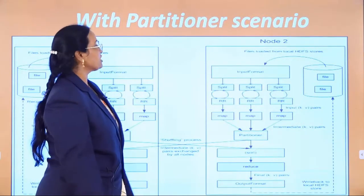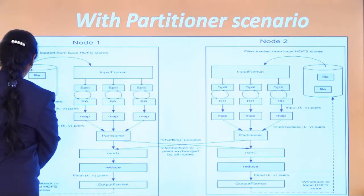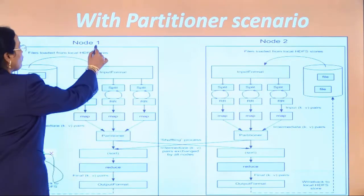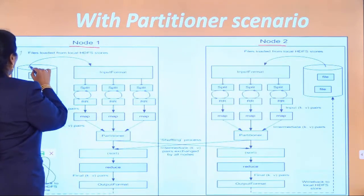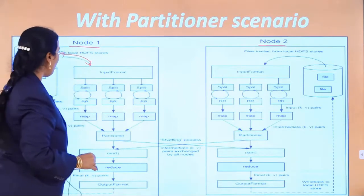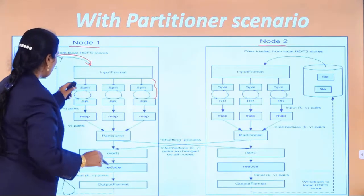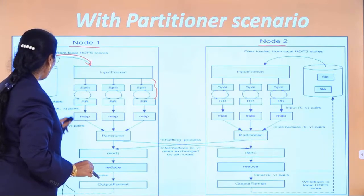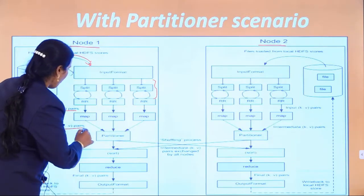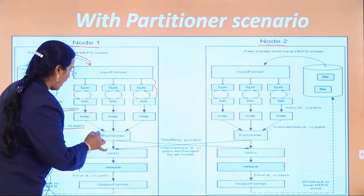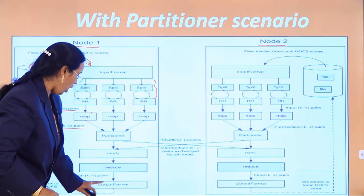Let us see the partitioner scenario — how the partitioner works. We have two nodes, node 1 and node 2. Files are loaded from the local disk. Input formats are processed, then splitting is done. Before splitting and mapping, record readers read the records, producing key-value pairs. The map jobs run, generating intermediate key-value pairs. Based on those map values, partitions are assigned. Then sorting and reducing are done, and the final output format is produced.